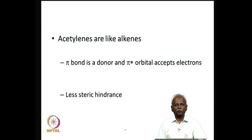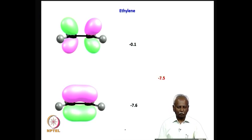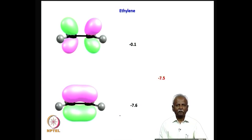Let us take a look at the chemistry of acetylenes and metal complexes with organometallic fragments. To begin with, I would like to remind you of the shape of the orbitals of ethylene. The pi and the pi star orbitals of ethylene are pictured here. The pi orbital consists of a single lobe on one side of the ethylene, and this pi cloud, which is the bonding pair of pi electrons, can be donated to the metal.